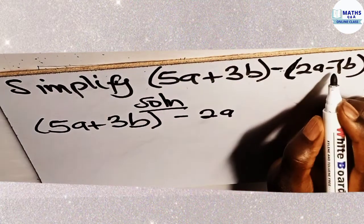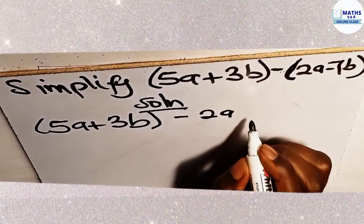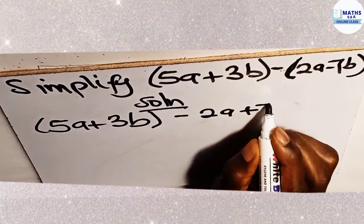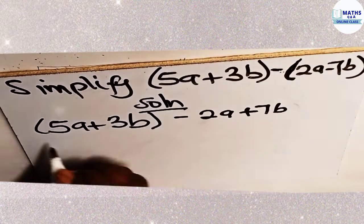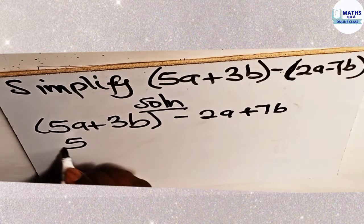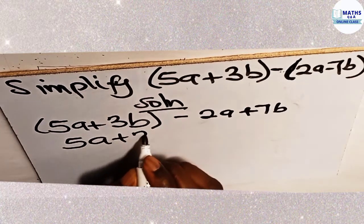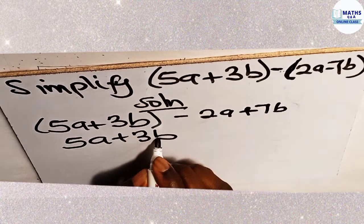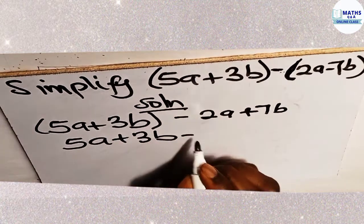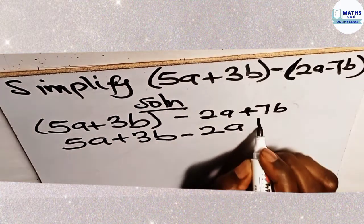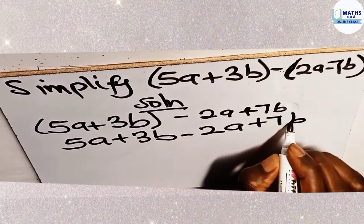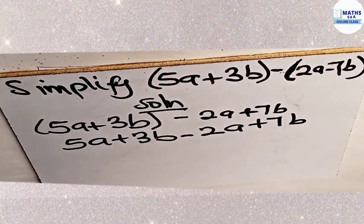And then negative multiply negative 7b gives us positive 7b. Now, let's write our items in this bracket, which were not multiplied by any number. We have opened the brackets. Now we have negative 2a plus 7b.